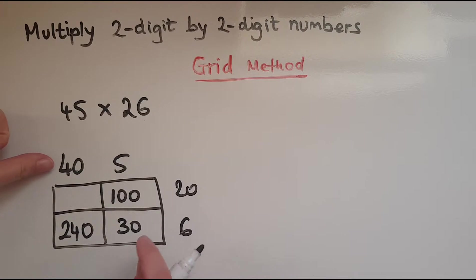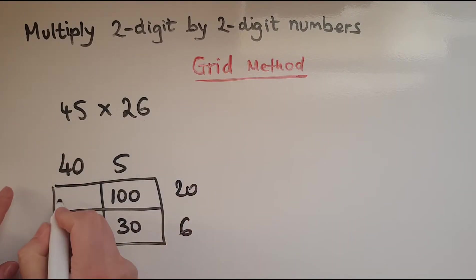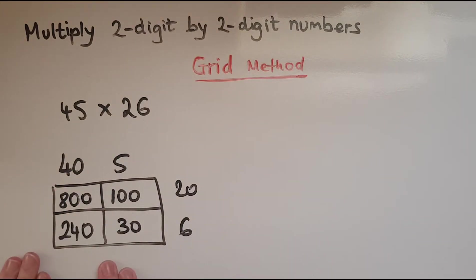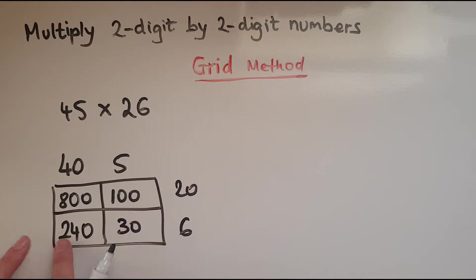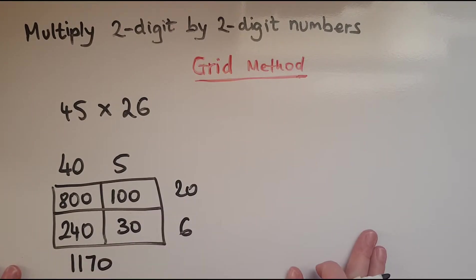Now we've got 40 times 20. We hide the 0s, do 4 times 2 which is 8, then add the 0s back — that is 800. So altogether: 800 and 100 makes 900; 900 and 240 is 1,140; and the 30 makes 1,170.